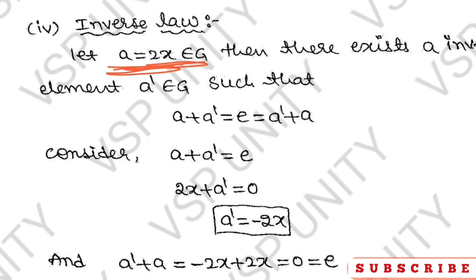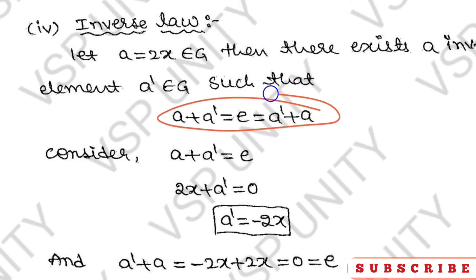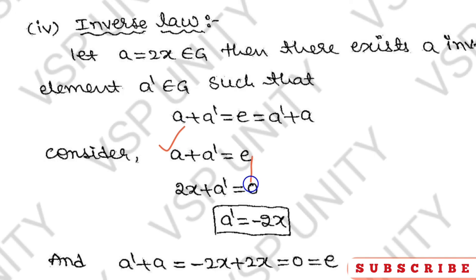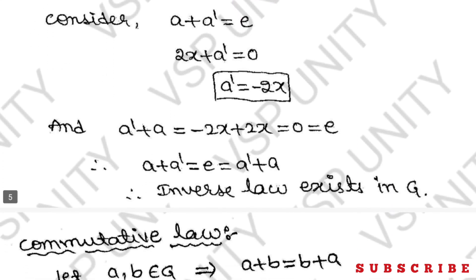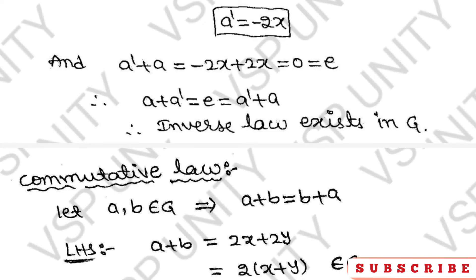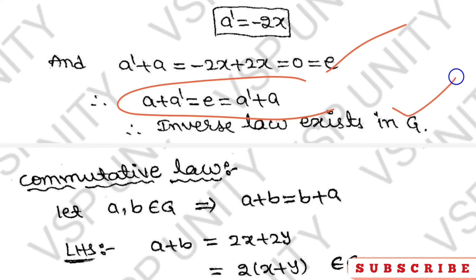Inverse property: A + A' = E = A' + A. Here A = 2x and E = 0. So A' = −2x. Checking A' + A = −2x + 2x = 0 = E. Therefore A + A' = E = A' + A, so the inverse of every element exists in G.